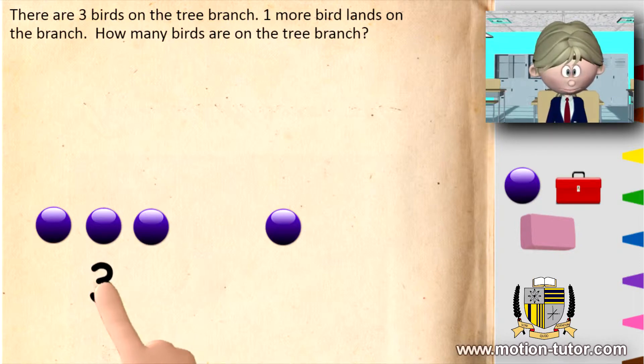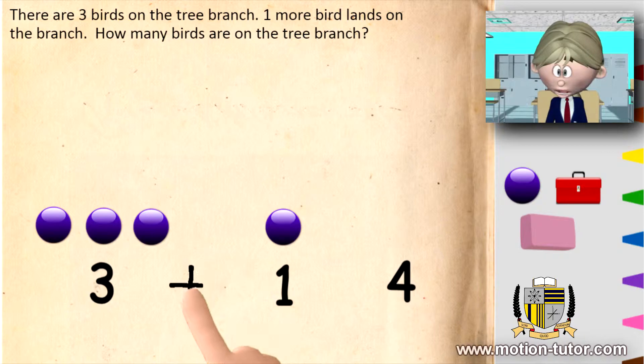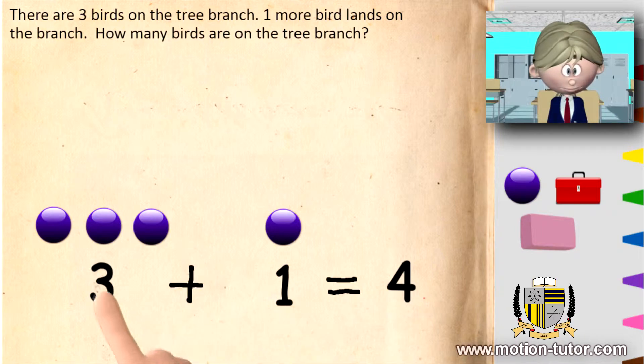The three and the one together is four. Three plus one is equal to four. And remember, these are the addends. This is the plus sign, here's the equal sign, and this is the sum.